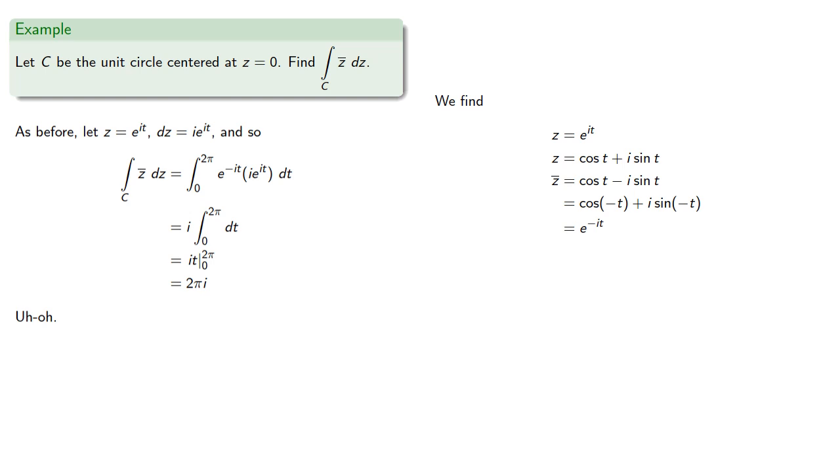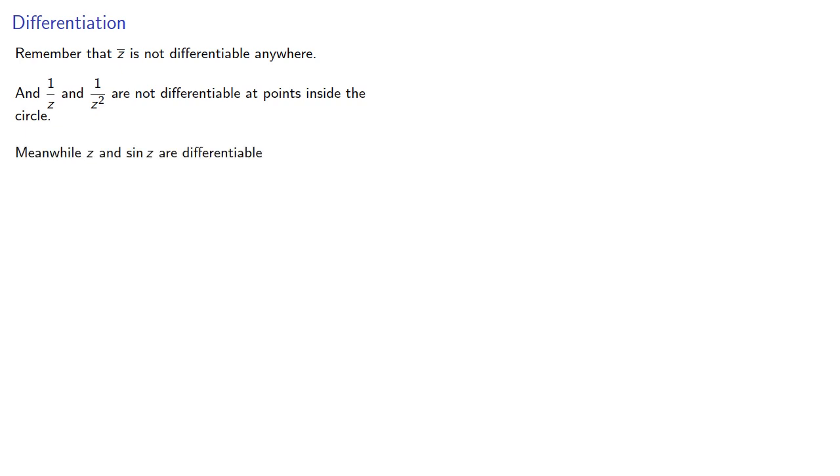So clearly there's something very strange going on. The critical observation here is that the conjugate of Z is not differentiable anywhere. And one over Z and one over Z squared are not differentiable at points inside the circle. Meanwhile Z and sine Z are differentiable. Well, actually even better, they're analytic at every point inside the circle. And this suggests the following.